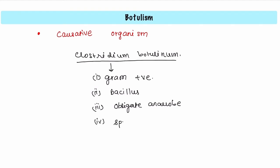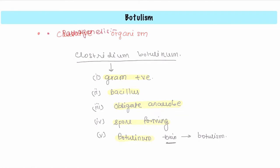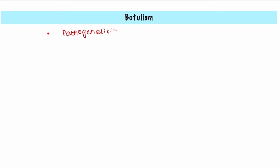Being an obligate anaerobe means that it can only survive in anaerobic conditions — the presence of oxygen will hamper its growth. Next, it is spore forming, meaning in unfavorable conditions it forms spores, and when conditions are favorable the spores germinate to form the bacilli again. Lastly, it forms a toxin known as botulinum toxin, and it is this toxin that causes botulism.